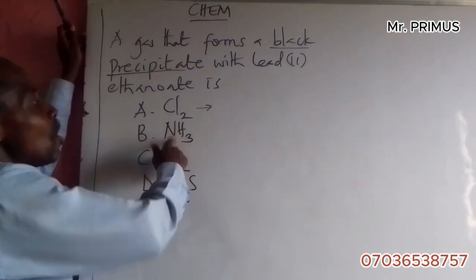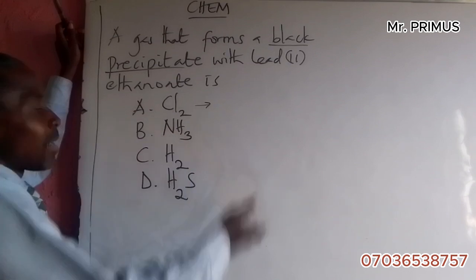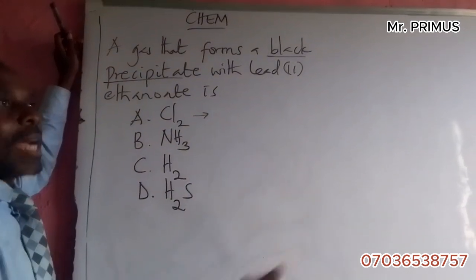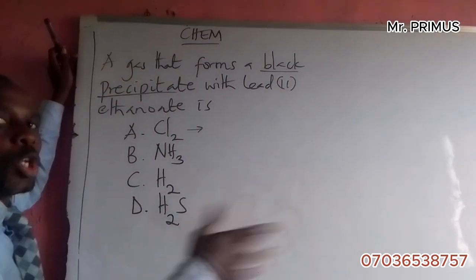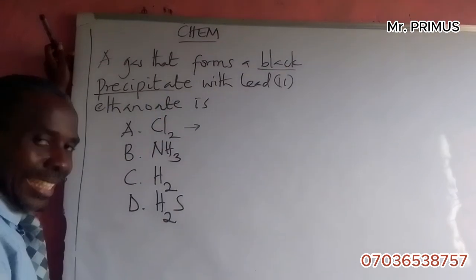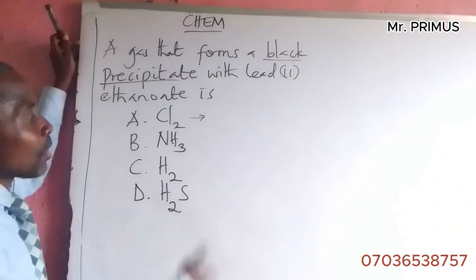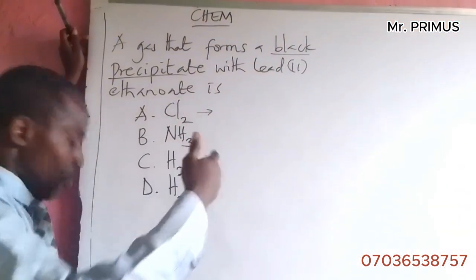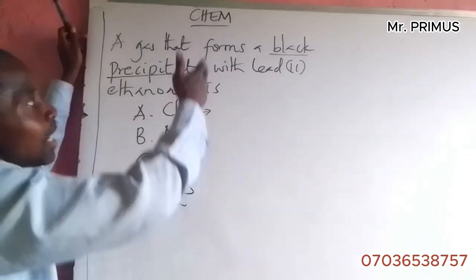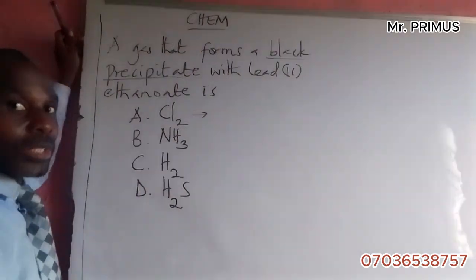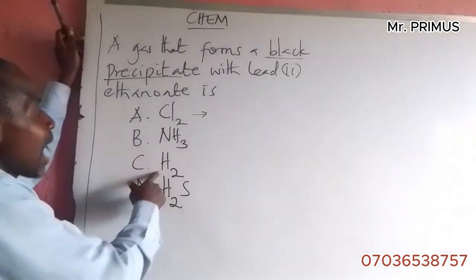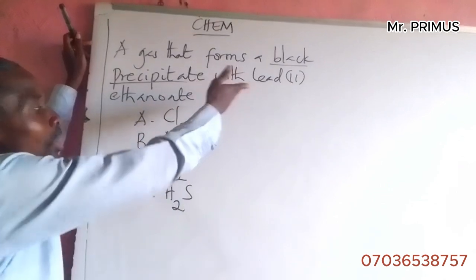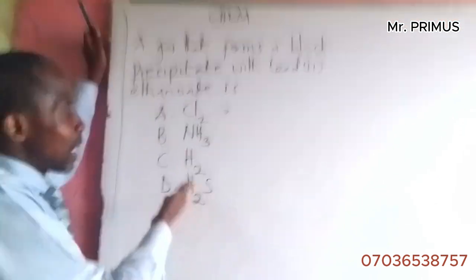Ammonia: if you combine ammonia with a chloride, you get dense white fume — ammonium chloride. So ammonia cannot give you a black precipitate with lead(II) ethanoate. Hydrogen gas also cannot give you this — we have already talked about how to identify hydrogen.